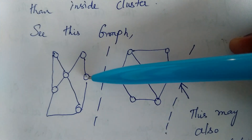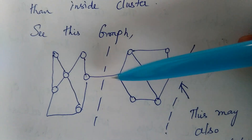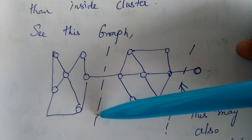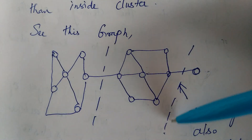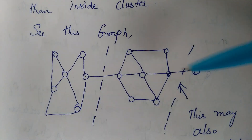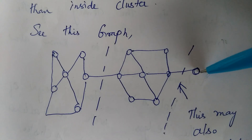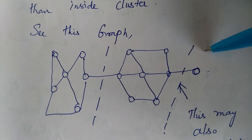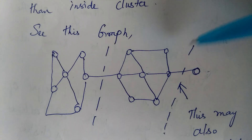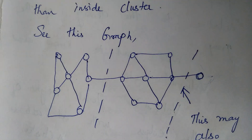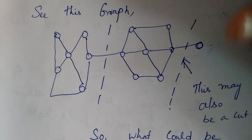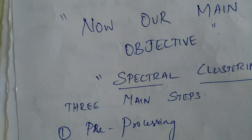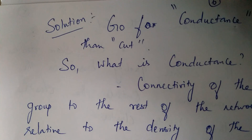For example, a good cluster with dense internal connections and weak between-cluster connections would have a fine cut score. However, the cut metric also assigns a good score to a degenerate partition where a single isolated node is separated out — even though that is not a meaningful cluster. This gives us a misleading interpretation, so we need another metric.